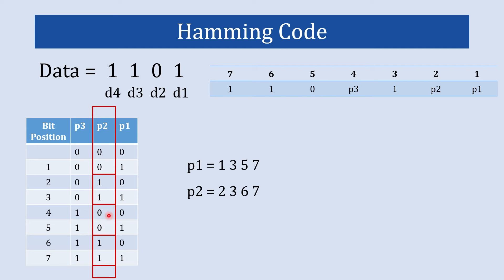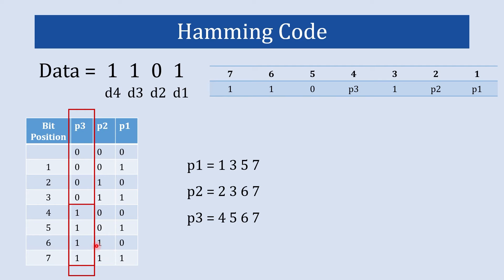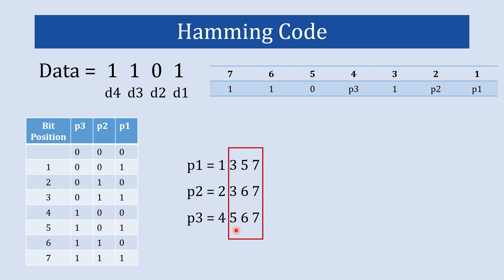Parity bit P3 checks all positions where the most significant bit is set to 1 — positions 4, 5, 6, and 7. Bit positions 1, 2, and 4 are the parity bits themselves, so to calculate each parity bit's value we use only the remaining data bits. The equations using even parity are: P1 = d1 XOR d2 XOR d4; P2 = d1 XOR d3 XOR d4; P3 = d2 XOR d3 XOR d4.